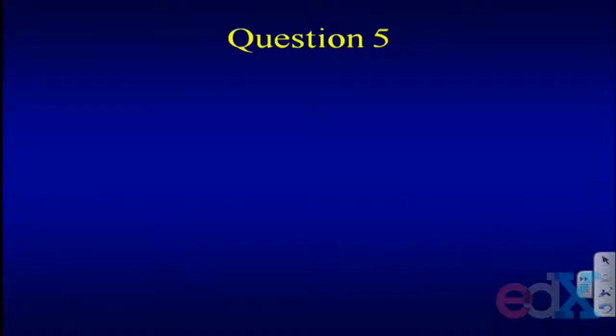Question five: your interpretation in question four is based on observational data. Could this be tested in an experimental setting? People will right away say we can't randomly assign people to alcohol — or can we? If yes, how and what would be the limitations? If no, why not, and what could be done experimentally to support the hypothesis? There are a couple of references in the paper where people have done some things experimentally. Think about what kind of experimental study could potentially mimic the results from this prospective cohort study.